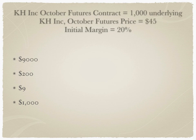The right answer is $45,000, because one contract has 1,000 underlying multiplied by $45, giving $45,000. Third question: KH Inc October futures contracts has 1,000 as the underlying, the October futures price is $45, and the initial margin is 20%. Calculate the initial margin. Is it $9,000, $200, $9, or $1,000?